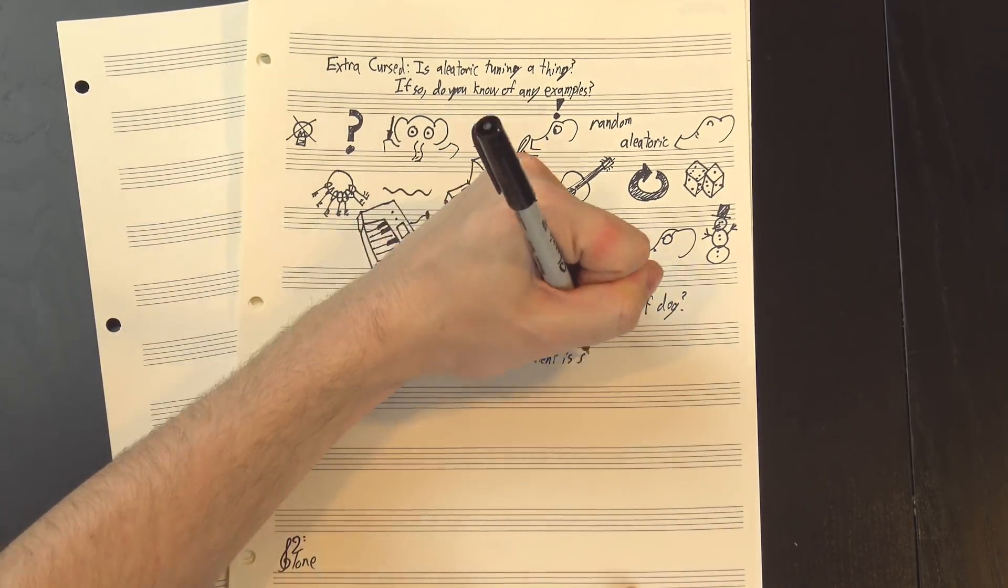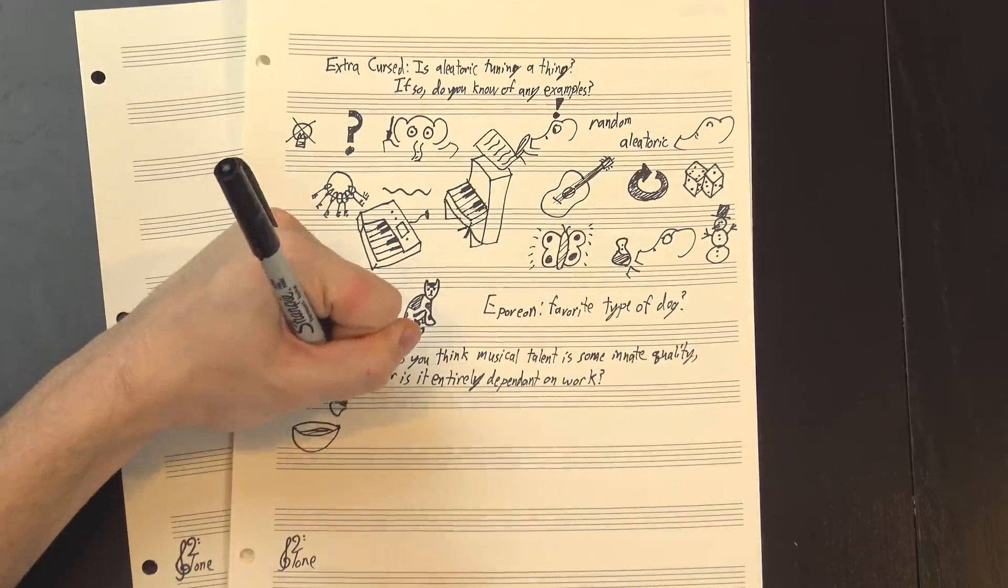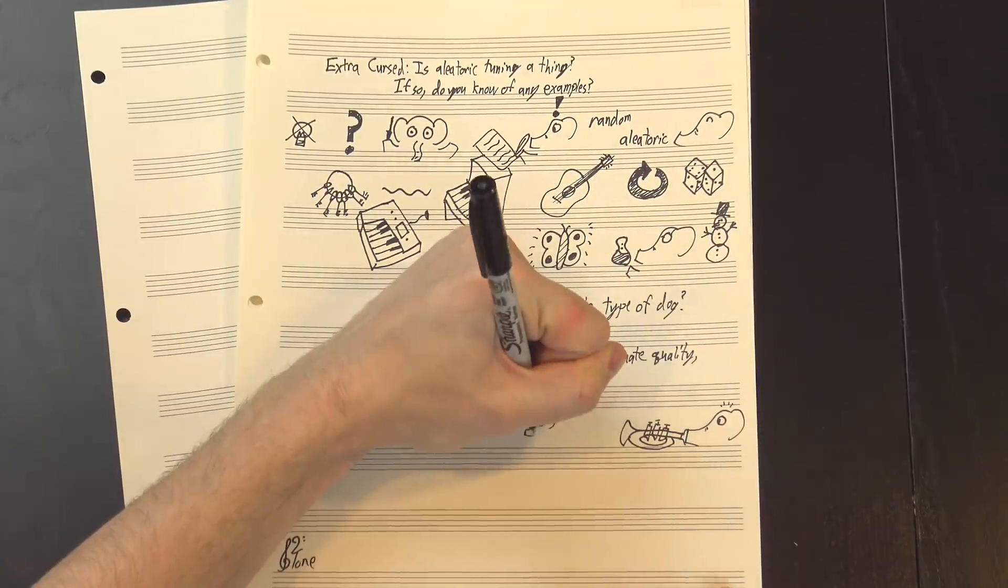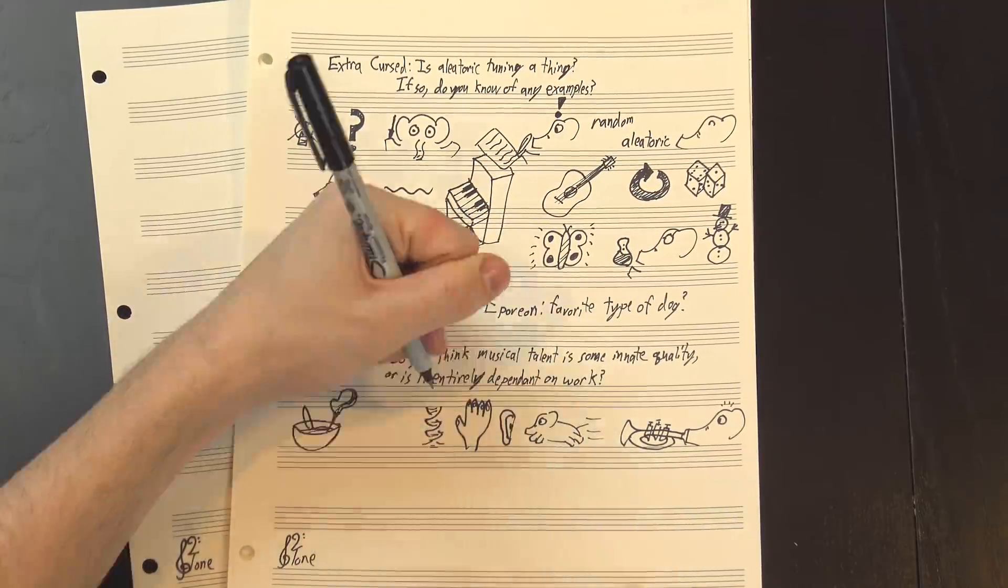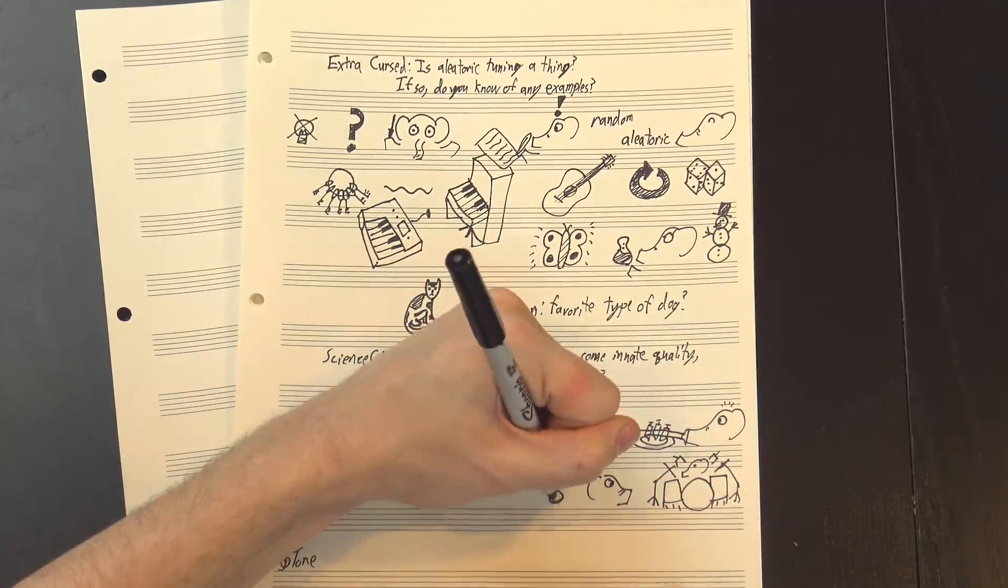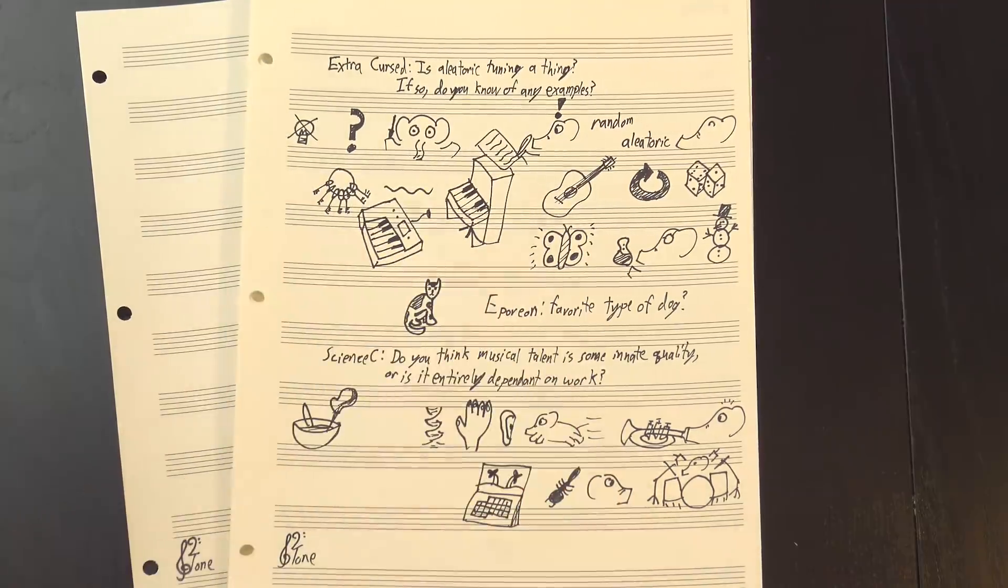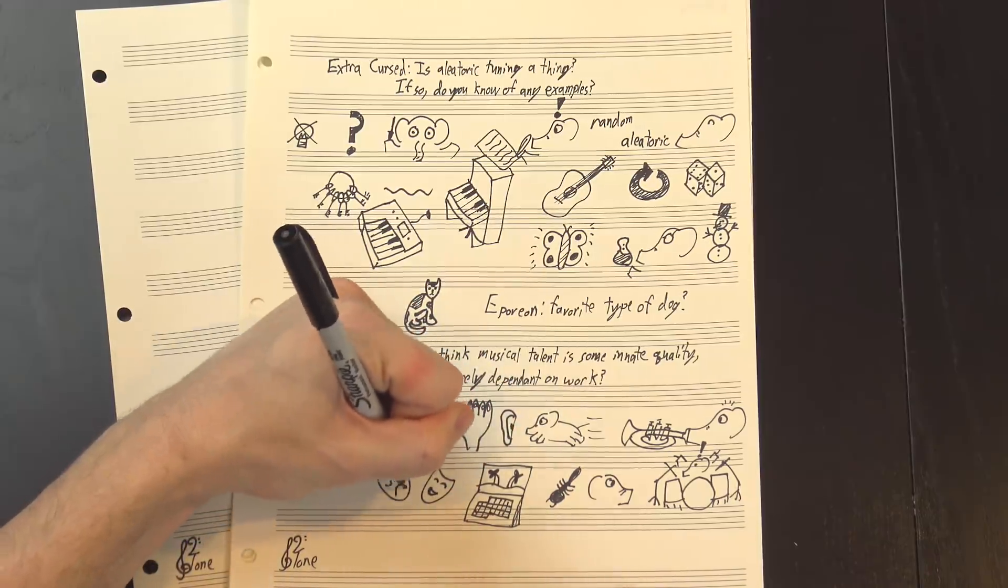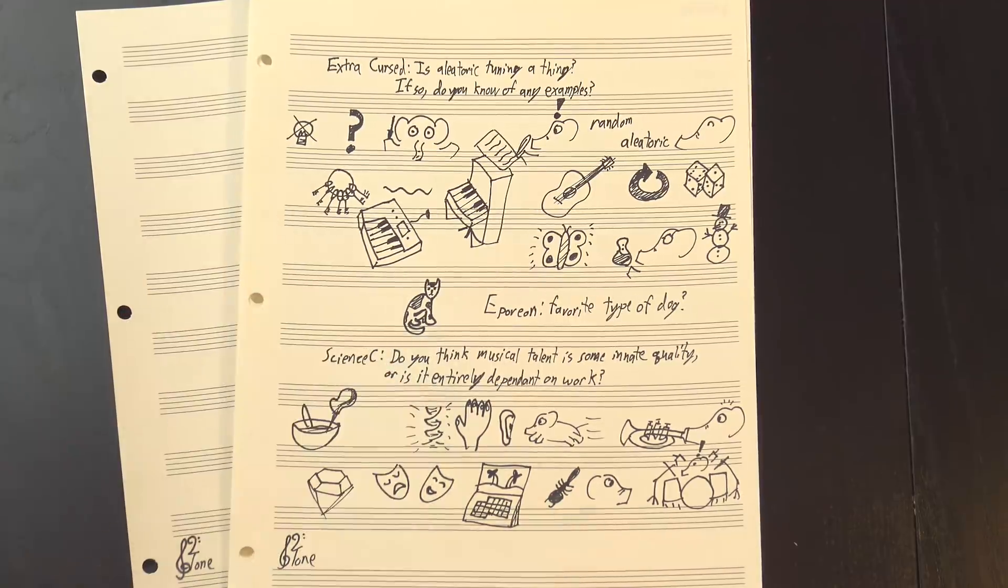For those of you who don't know, aleatoric is a fancy word for random, and it's often used to describe pieces where the composer intentionally leaves important decisions either up to the performers or up to chance. This could mean rolling dice to choose the notes of your melody, letting performers repeat sections an indeterminate number of times, or, in the case of this question, tuning your instruments randomly. I think it'd work best on a keyboard-like instrument, so that you can separately tune each note, and if you did it on an electric one, you could even change the tuning between sections.